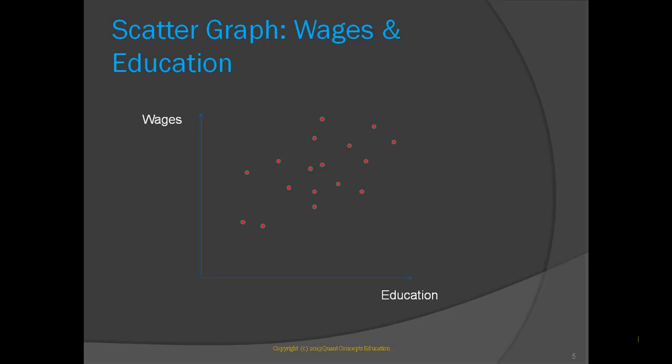Now, how can we determine the general pattern in the dataset? That is, can we observe any relationship between wages and education based on the points on our scattergraph? A natural way of uncovering a possible pattern or relationship is by drawing the line of best fit. The line of best fit is the line that best represents the general pattern in the sample. A regression line is simply the line of best fit for a given sample.